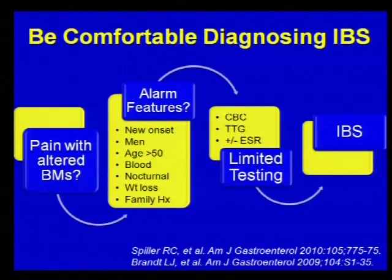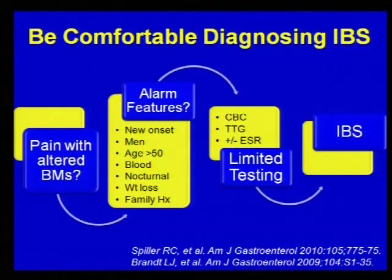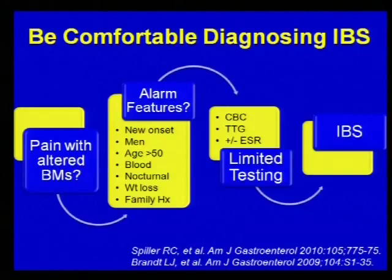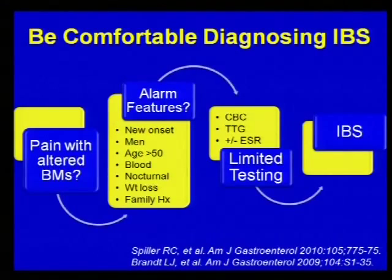If you look at literature from 2009 to current day, IBS is a clinical diagnosis requiring pain with altered bowel movements — if someone has significant diarrhea with no abdominal pain, you need to think about other diagnoses. Once pain and altered bowel movements are present, go through your checklist of alarm features: new onset, male patient, new onset after age 50, blood in stool, nighttime stooling, weight loss, or family history of inflammatory bowel disease, GI cancers, or celiac disease. If none of those are present, the guidelines recommend checking a complete blood count and an IgA tissue transglutaminase antibody — and possibly an inflammatory marker like ESR or CRP, though that's not strongly recommended. After this limited testing, if negative, you can comfortably arrive at the diagnosis of IBS.